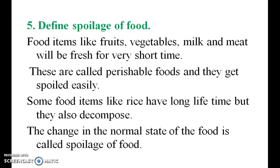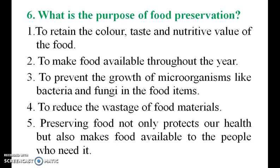Define spoilage of food. Food items like fruits, vegetables, milk, and meat will be fresh for a very short time. These are called perishable foods and they get spoiled easily. Some food items like rice have a long lifetime but they also decompose. The change in the normal state of the food is called spoilage of food.